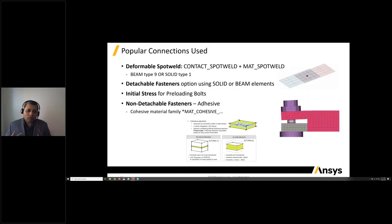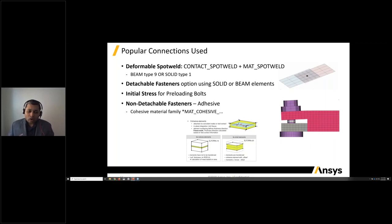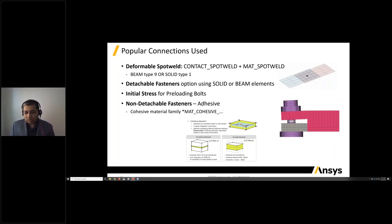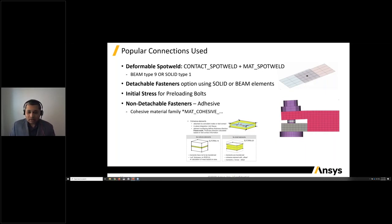For popular connections, we have options for deformable spot welds, whether represented as a beam or solid. We have options for detachable fasteners as solid or beam where you want a bolt joint or connection to fail, and the option for initial stress or pre-loading of bolts numerically. We're also seeing a lot of customers using non-detachable fasteners like adhesive, and we have developed a whole family of material models to model adhesives using element formulation 19 or 20.